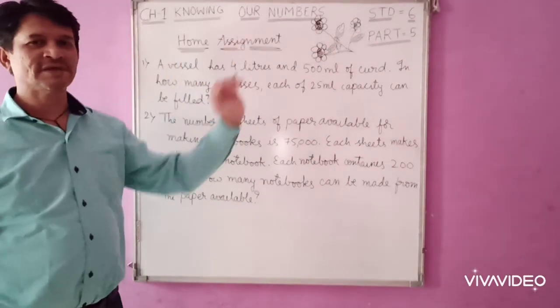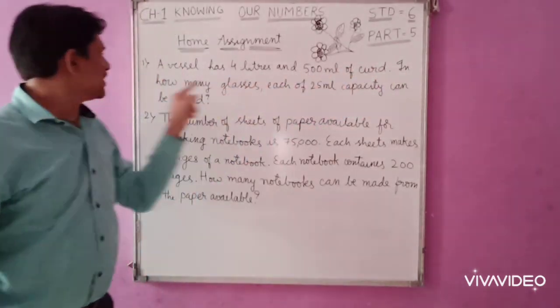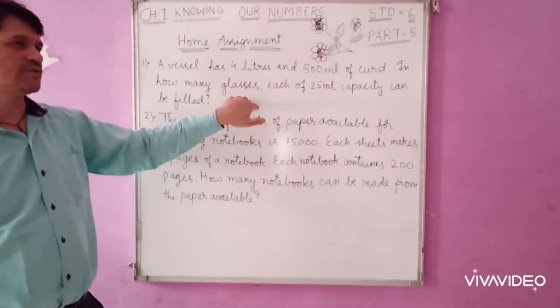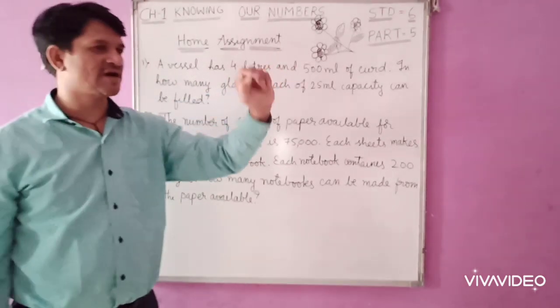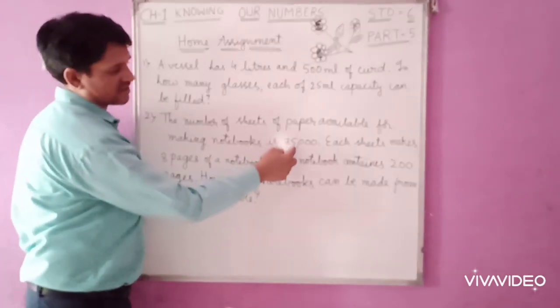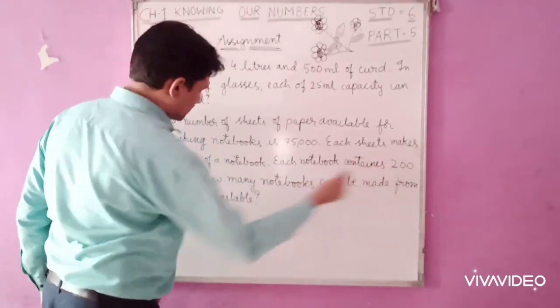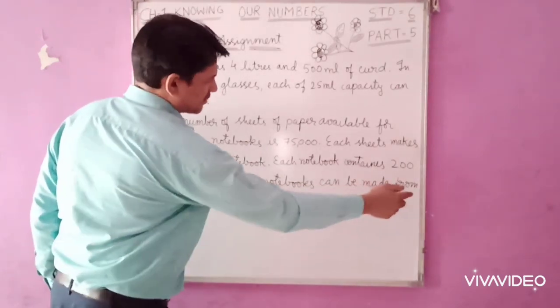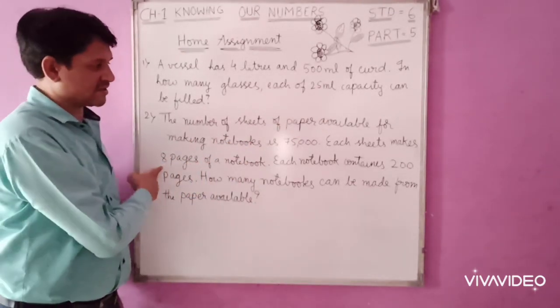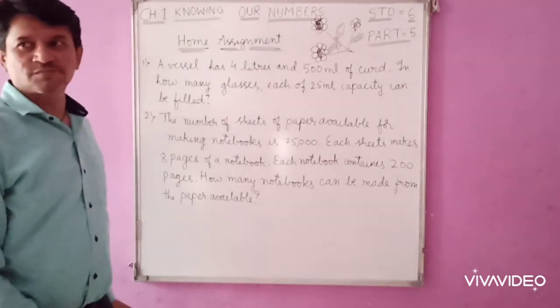This is your home assignment. First question: a vessel has 4 liter and 500 ml of curry. In how many glasses, each of 25 ml capacity, can it be filled? You have to divide this. First convert 4 liter 500 ml into milliliter and divide by 25. Second question: The number of sheets of paper available for making notebooks is 75,000. Each sheet makes 8 pages of a notebook. Each notebook contains 200 pages. How many notebooks can be made from the paper available? First multiply 75,000 by 8, then divide by 200. You can solve these problems at home.